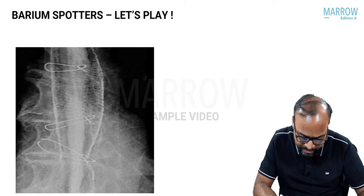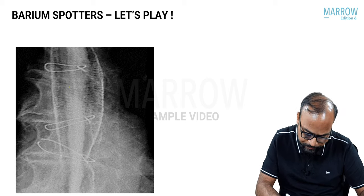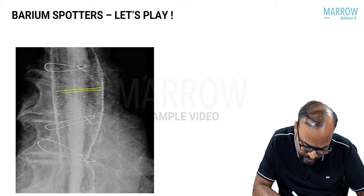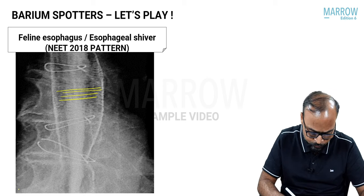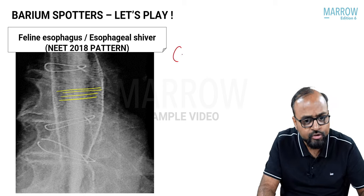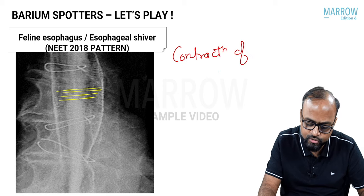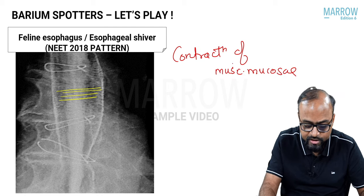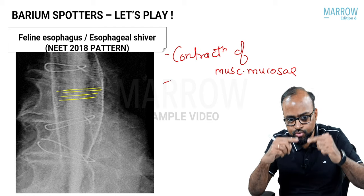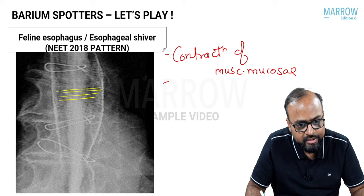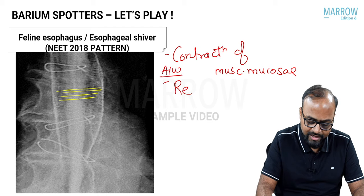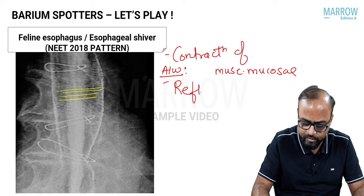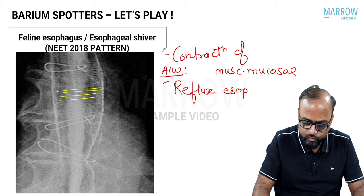Looking at the mucosal coating of the esophagus, you can see faint horizontal lines like a shiver — this is called esophageal shiver or feline esophagus. It is associated with contractions of the muscularis mucosae, giving rise to alternate bands along the mucosal layer. It is associated with reflux esophagitis.